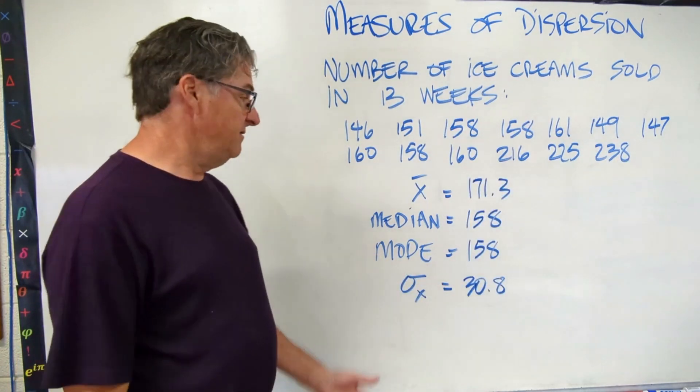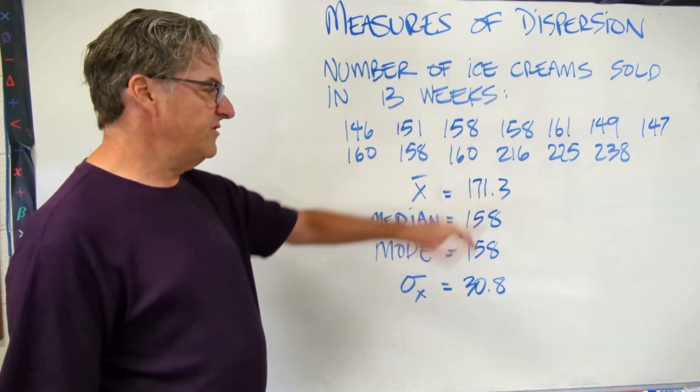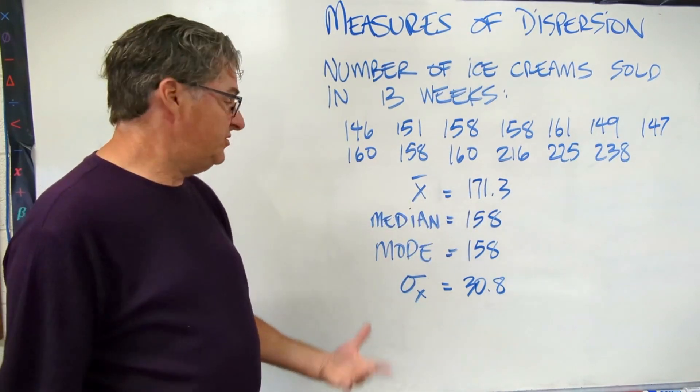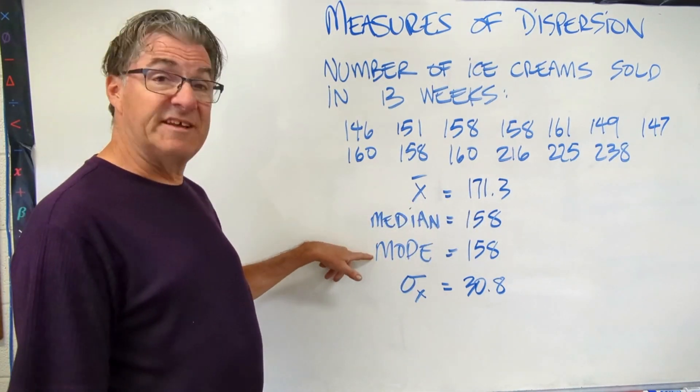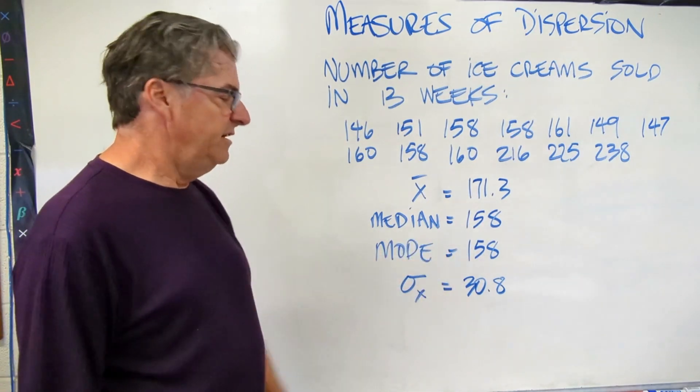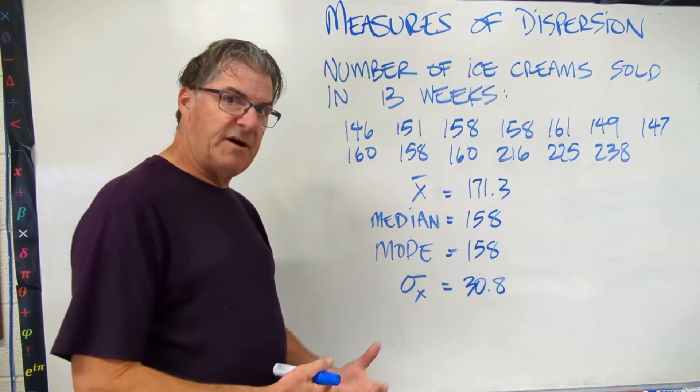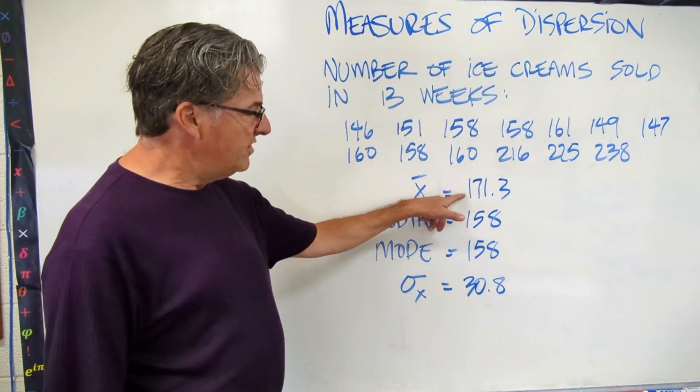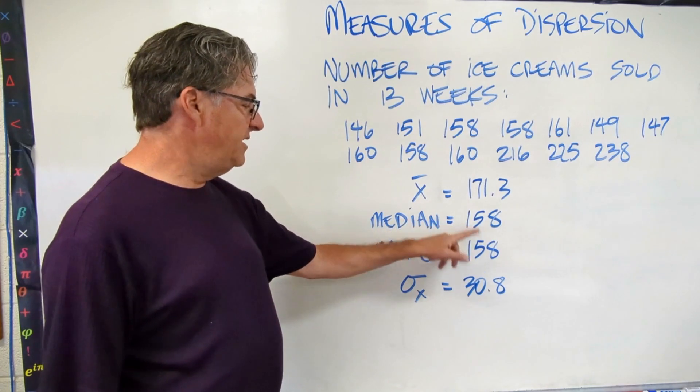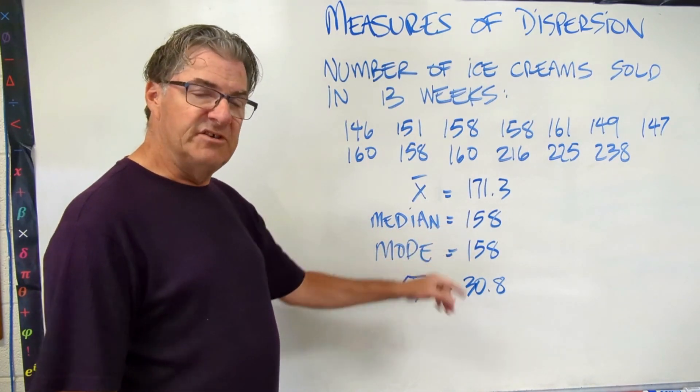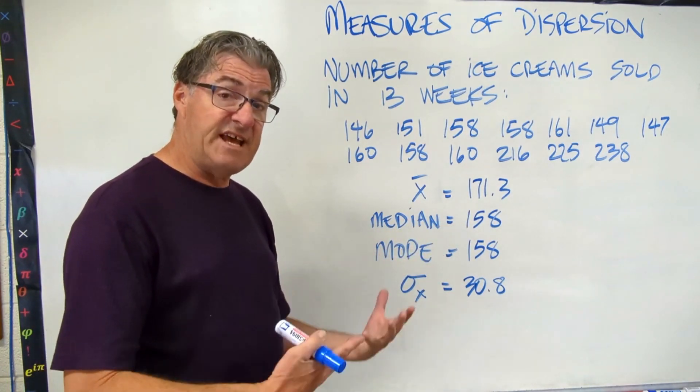Alright, here's what I get. My mean, 171.3, that's the average. My median and my mode are the same, 158. And then my standard deviation is 30.8. Now, let's talk about these numbers together. First off, the average is quite a bit higher than the median and the mode. So that's going to tell us something about our data. Maybe there's outliers, maybe there's values that are in the high end, or a bunch of them.